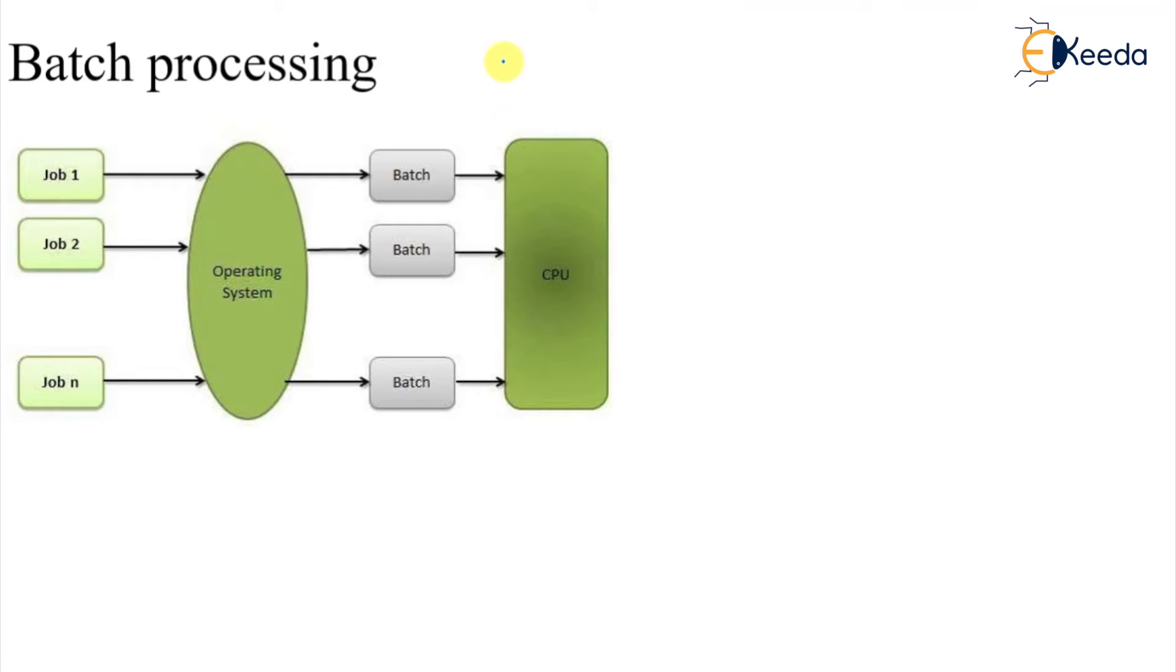We are learning the properties of operating systems and in that series we are talking about batch processing. What is batch processing and how does it work? For understanding batch processing we have to go to the history of computers. In that history of computers we find that the computer at that time was only capable of running a single job.